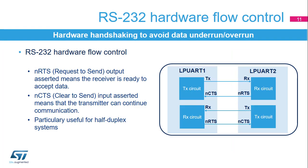In the RS-232 standard, it is possible to control the serial data flow between two devices by using the NCTS input and the NRTS output. These two lines allow the receiver and the transmitter to alert each other of their state. This slide shows how to connect two devices in this mode, the idea being to prevent dropped bytes or conflicts in case of half-duplex communication. Both signals are active low.